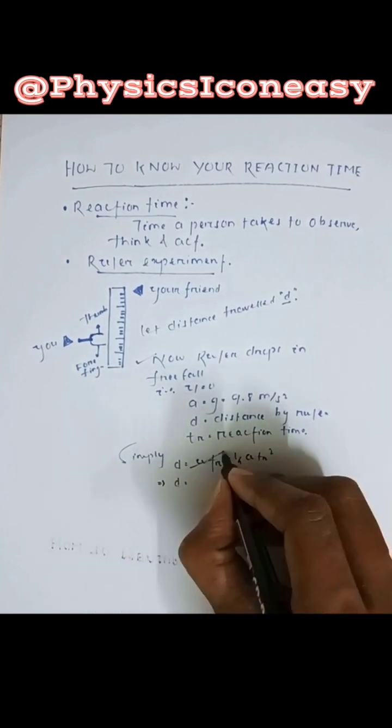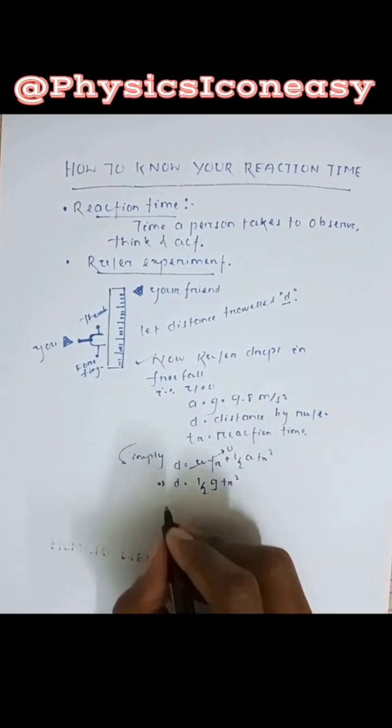Simply, d is equal to ut plus half g t square and here ut becomes 0 as initial velocity is equal to 0.